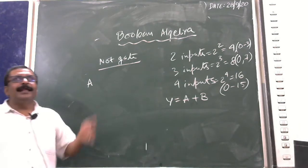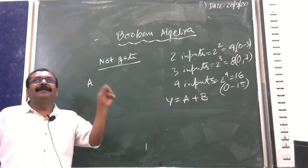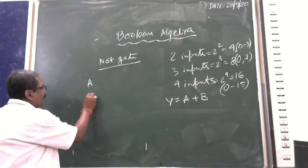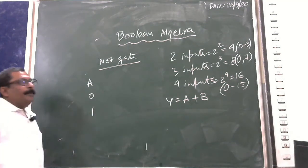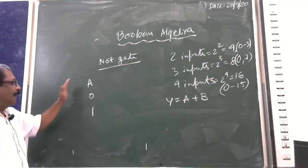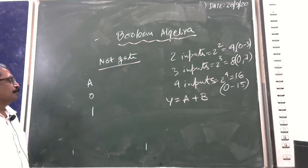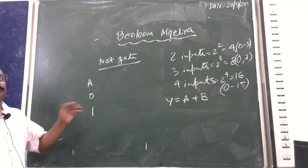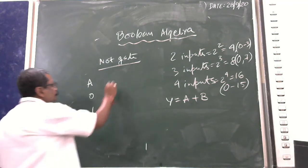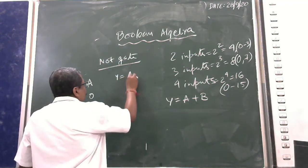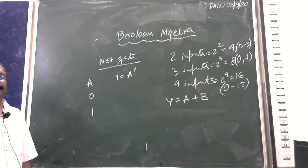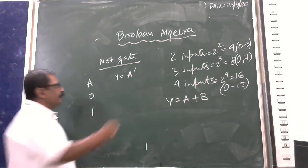In Boolean Algebra, the input A is either 0 or 1. The NOT gate has a single input and the output will be the complement of the input. Y is equal to A-bar, which can also be written as A with a bar on top — both notations mean complement.